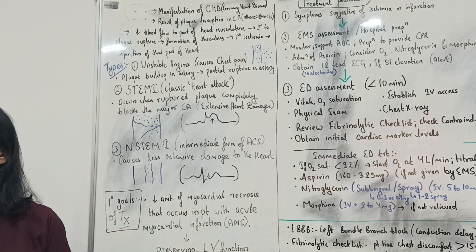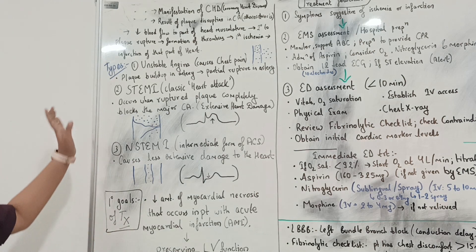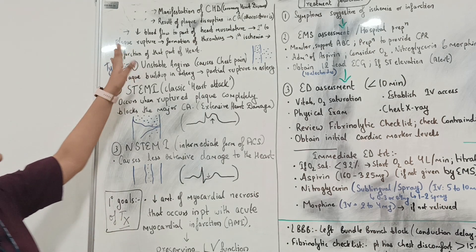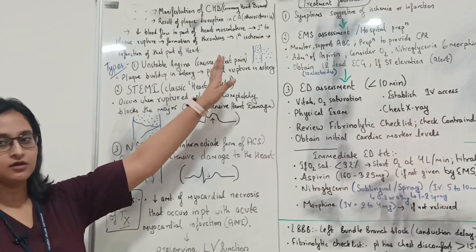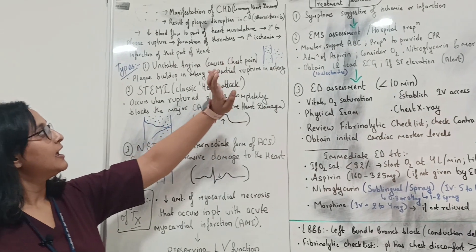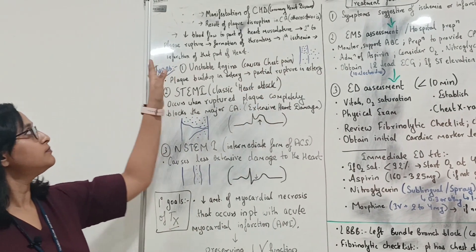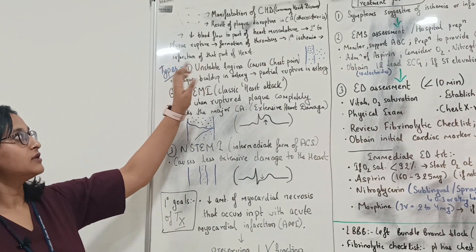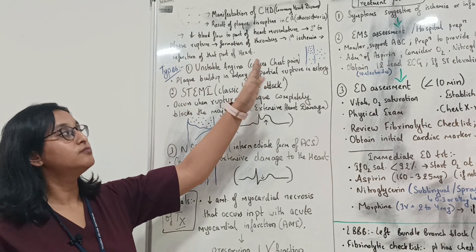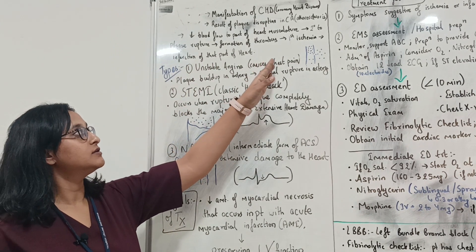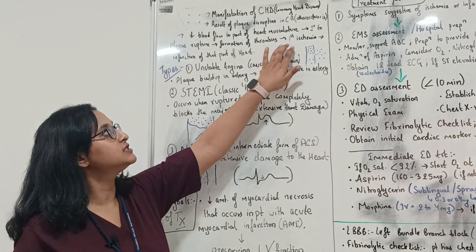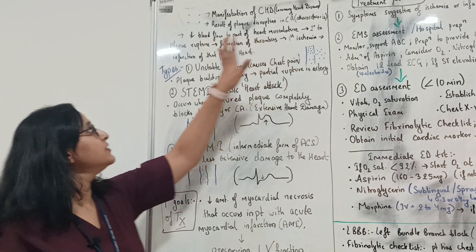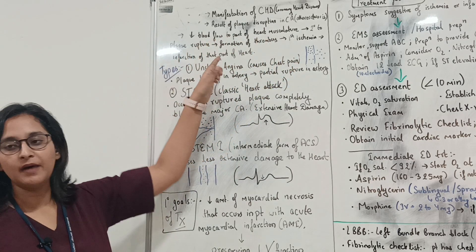As a result, there is reduced blood flow to parts of the heart muscle, secondary to plaque rupture. This leads to formation of a thrombus, which results first in ischemia and further infarction of that part of the heart.